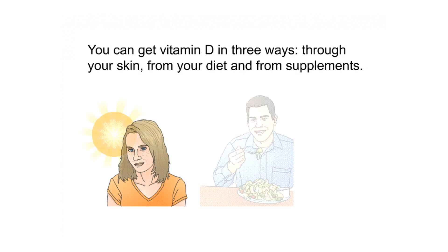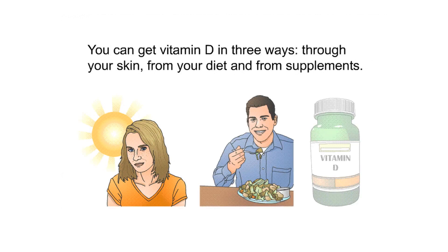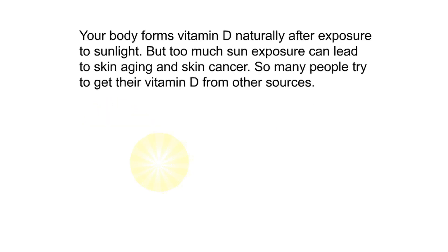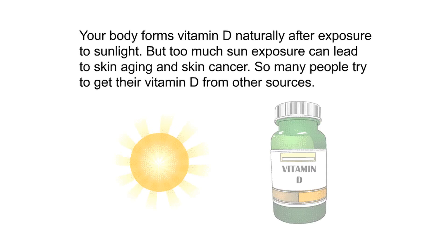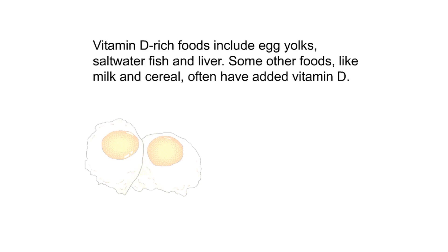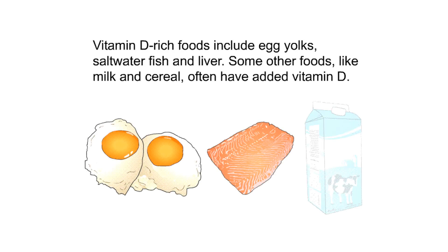You can get vitamin D in three ways: through your skin, from your diet, and from supplements. Your body forms vitamin D naturally after exposure to sunlight, but too much sun exposure can lead to skin aging and skin cancer, so many people try to get their vitamin D from other sources. Vitamin D-rich foods include egg yolks, saltwater fish, and liver.